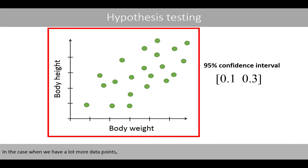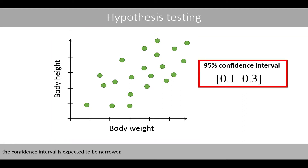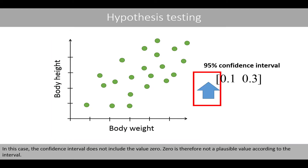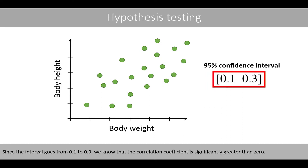In the case where we have a lot more data points, the confidence interval is expected to be narrower. In this case, the confidence interval does not include the value 0, so 0 is not a plausible value according to the interval. Since the interval goes from 0.1 to 0.3, we know that the correlation coefficient is significantly greater than 0.